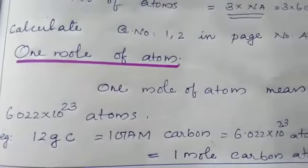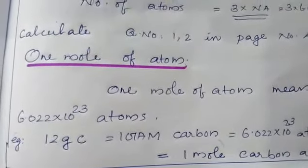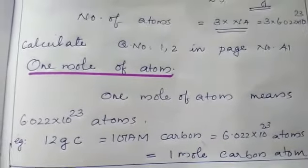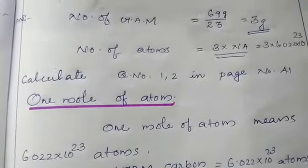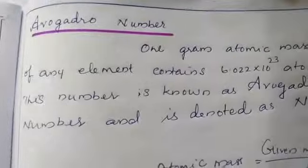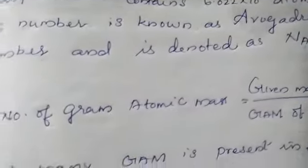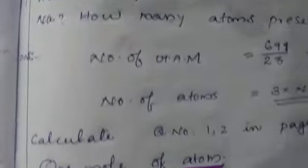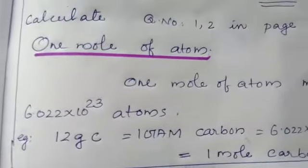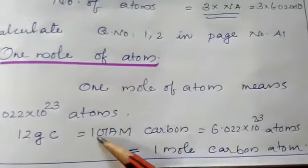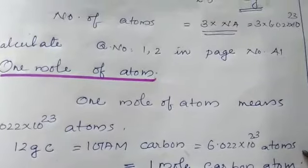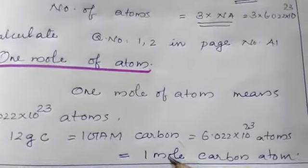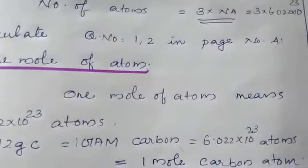So what does 1 mol of atom mean? 1 mol of atom means 6.022 × 10²³ atoms, which is equal to Avogadro number, denoted as Nₐ. So 12 g of carbon can be written as: 1 GAM of carbon = 6.022 × 10²³ atoms = 1 mol of carbon atom.